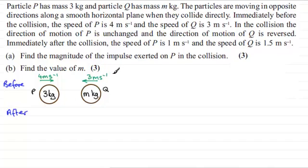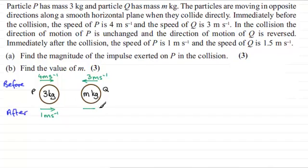In the collision, the direction of motion of P is unchanged and the direction of Q is reversed. So immediately after the collision, P is still moving in the same direction at 1 m per second, and Q moves off at 1.5 m per second in the opposite direction. That's your fairly standard diagram.